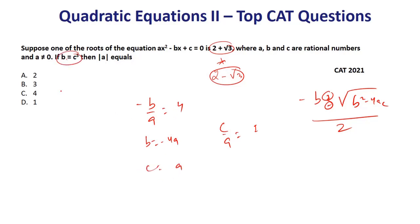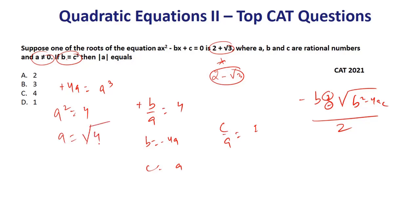Given b = c³, we can write -4a = a³. Since a ≠ 0, we get a² = 4, so |a| = 2. The answer is option A. This was from CAT 2021.